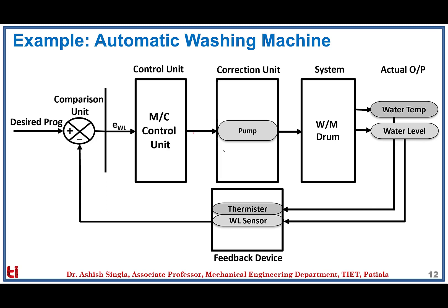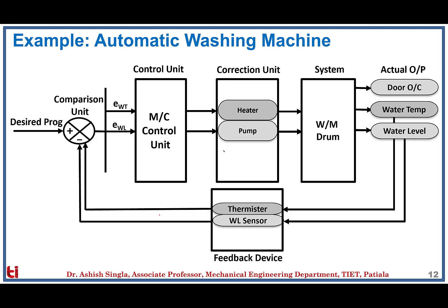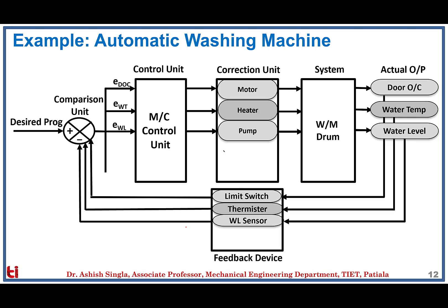The next output parameter is water temperature, measured by a thermistor acting as a temperature sensor. The error in water temperature is constructed, and the machine control unit instructs the heater to nullify it. The door opening and closing is another parameter — the door must be closed before executing the next cycle. Door status is sensed with limit switches, the error is calculated, and the machine control unit instructs the corresponding motor to take necessary action.